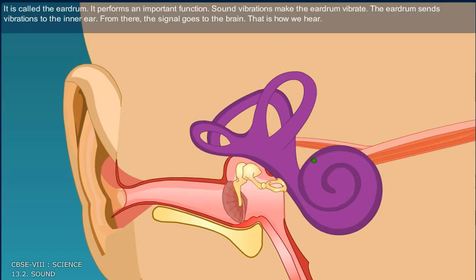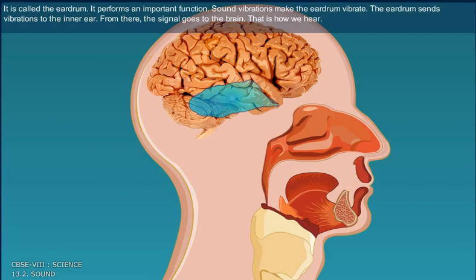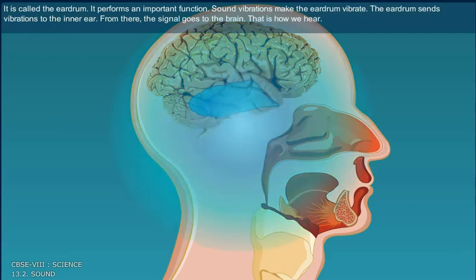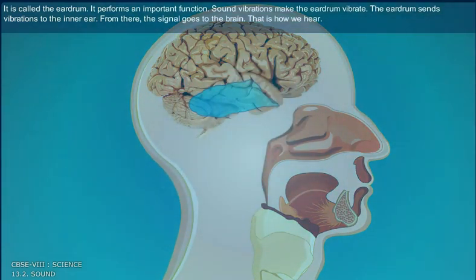Sound vibrations make the eardrum vibrate. The eardrum sends vibrations to the inner ear. From there, the signal goes to the brain. That is how we hear.